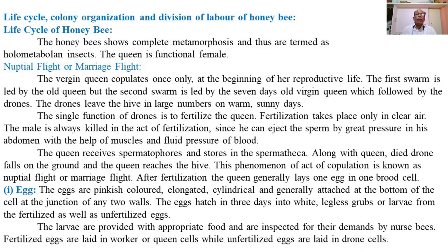The queen is the functional female, fertile female, or real mother of the honeybee colony. She lays two types of eggs — fertilized or unfertilized — from which either female or male members develop. That is, workers or drones can be developed from fertilized or unfertilized eggs respectively. The queen decides the sex of her progeny.